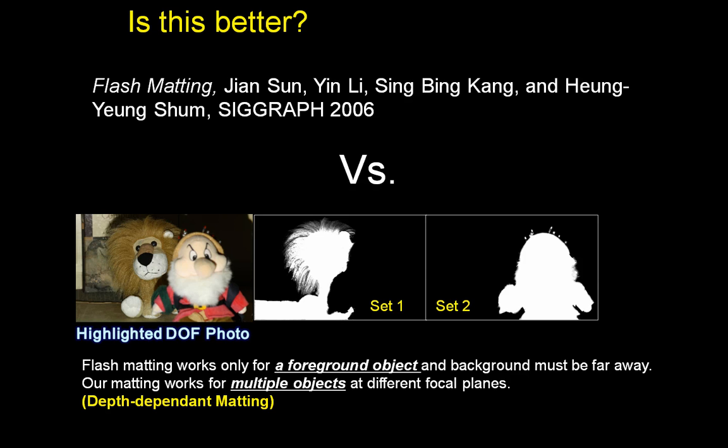Flash matting technique is a good comparison to ours. Both are active illumination methods that use two images, and the matting quality is similar. However, one big difference is that our method can mat objects at different focal planes while flash matting works only for a foreground object. This is a useful feature for practical applications, allowing selectivity for matting objects by simply changing camera focus.